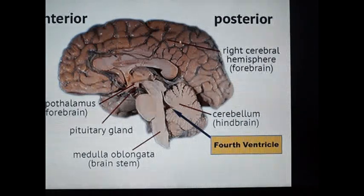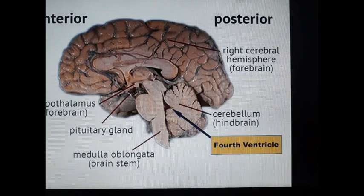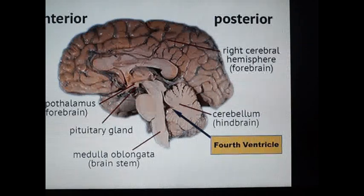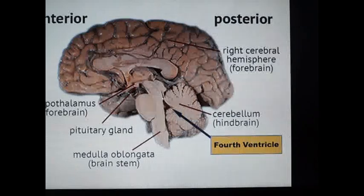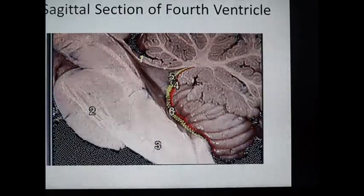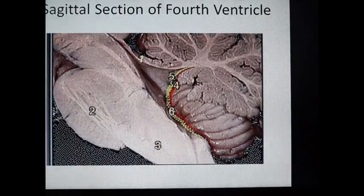Here is a sagittal section of the brain showing the location of the fourth ventricle. The fourth ventricle is present within the hindbrain — the cavity in the hindbrain in front of the cerebellum and behind the pons and medulla oblongata. This small triangular tent-shaped cavity is the fourth ventricle.